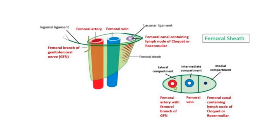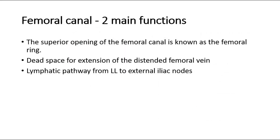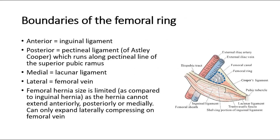The intermediate compartment is the femoral vein, whereas the lateral compartment is the femoral artery. Regarding the femoral canal, the superior opening of the femoral canal is known as the femoral ring. The femoral canal is the dead space for extension of the distended femoral vein, and also serves as the lymphatic pathway from the lower limb to the external iliac nodes.